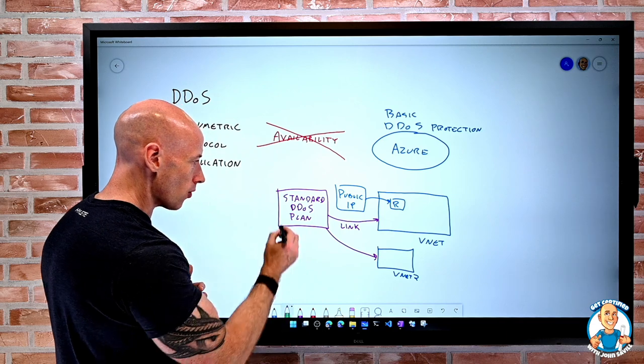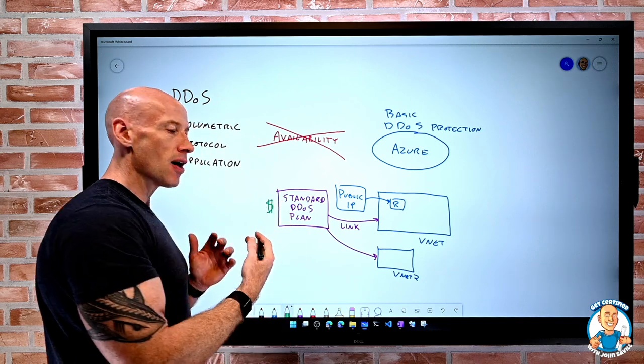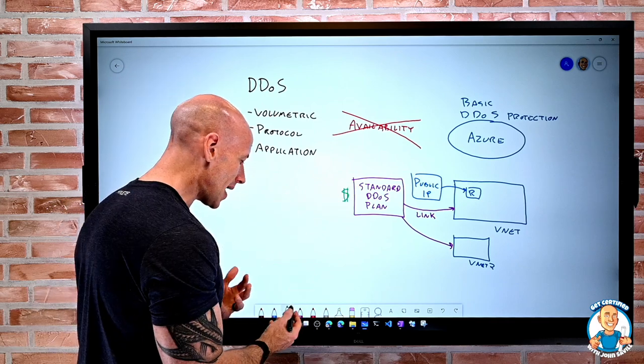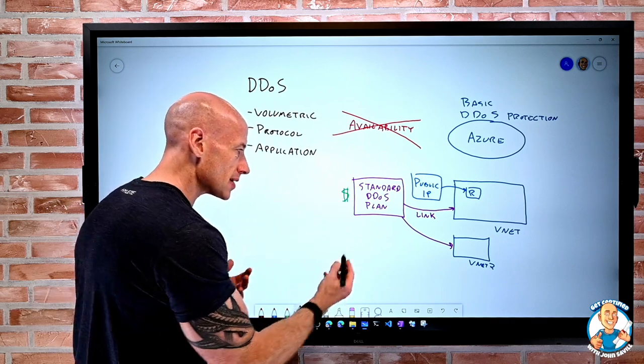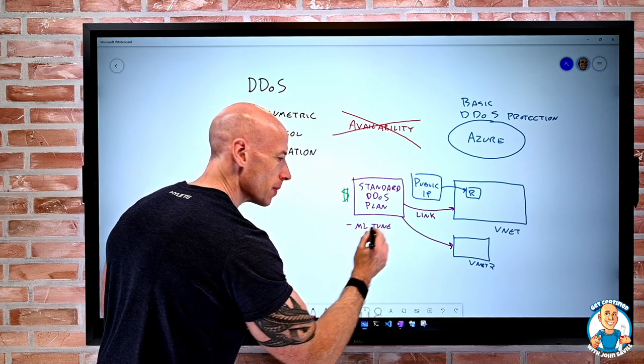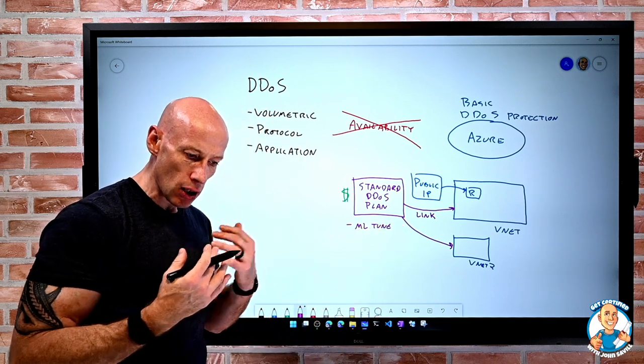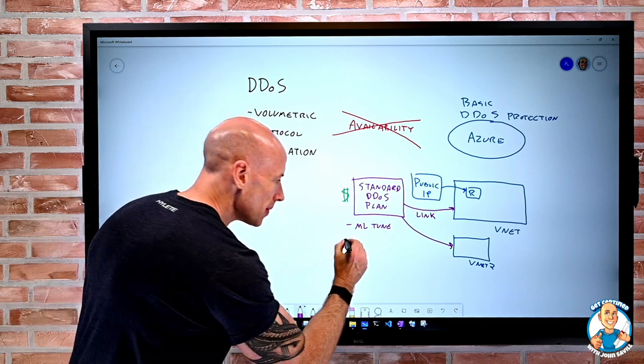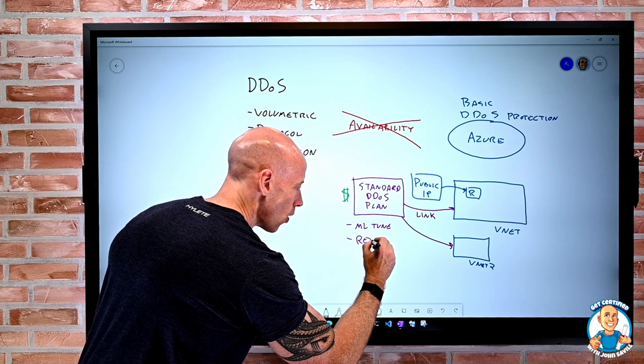Now obviously, this is what I pay for. I'm paying for this enhanced protection. But what this enhanced protection actually does is it's going to tune itself. It's going to use machine learning to tune what is my normal type of interaction. So I have adaptive tuning.